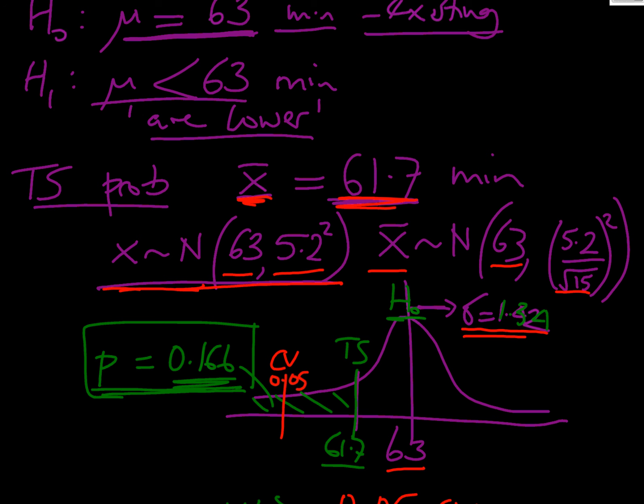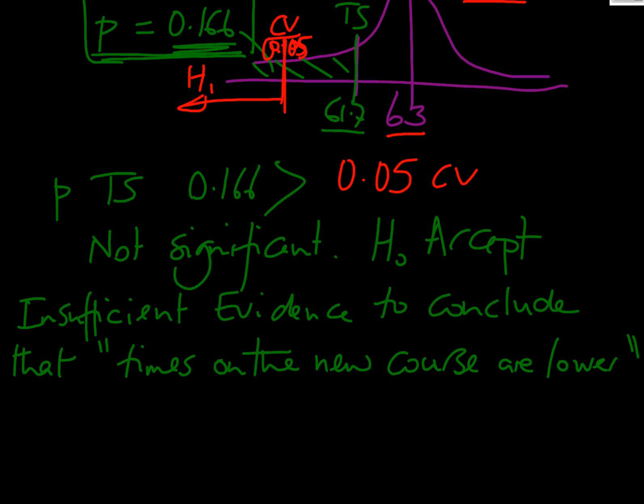They said to us that they wanted us to do this with a significance level of 5%. So our critical value, because it's a one tail test, is going to be 0.05. So there's our critical value, which is more extreme. That's our critical region. Our test statistic is not in our critical region, which would be our H1 area. It's near our mean. Therefore, it's in our H0 area.